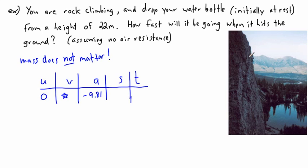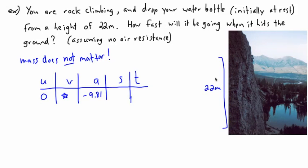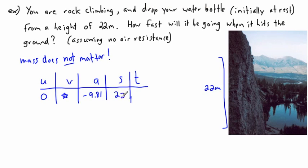If I made the acceleration positive, the bottle would go straight up — not realistic. The height is 22 meters. My displacement is 22 meters, but I can't write positive 22 — that would mean the bottle ends up 22 meters above where it started. Since everything upward is positive and downward is negative, and it falls downward, the displacement is negative 22 meters. I don't know the time and hopefully don't need it.